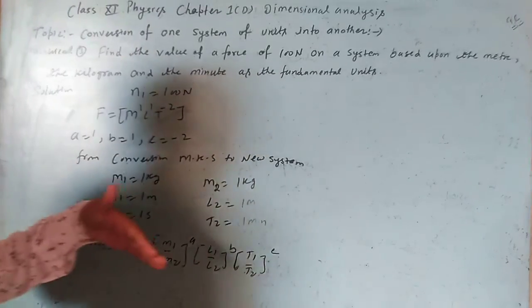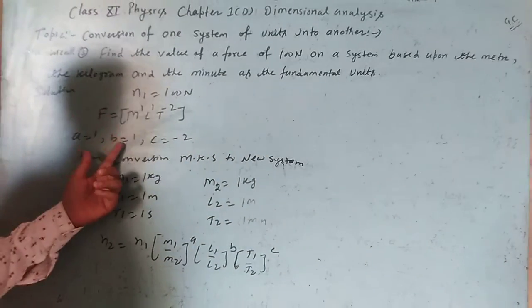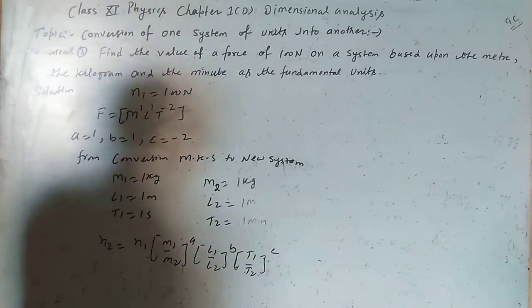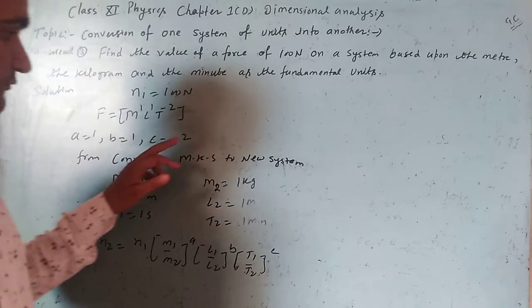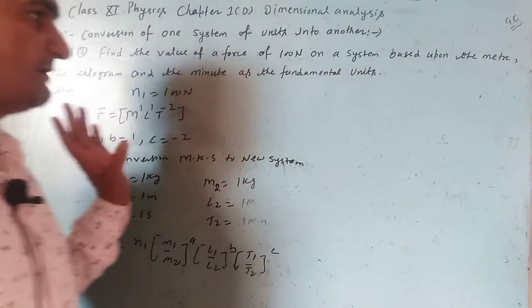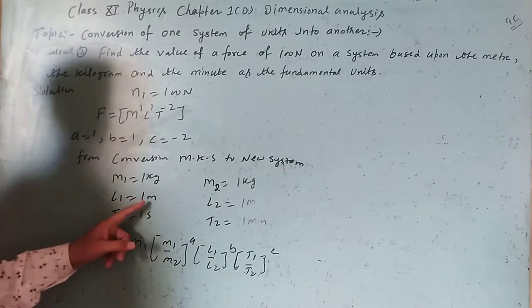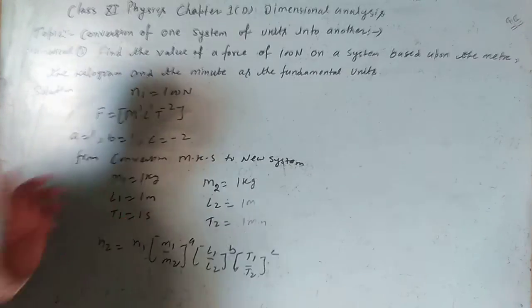For this numerical: a = 1, b = 1, c = -2. From MKS system, the old system has M1 = 1 kilogram, L1 = 1 meter, T1 = 1 second.